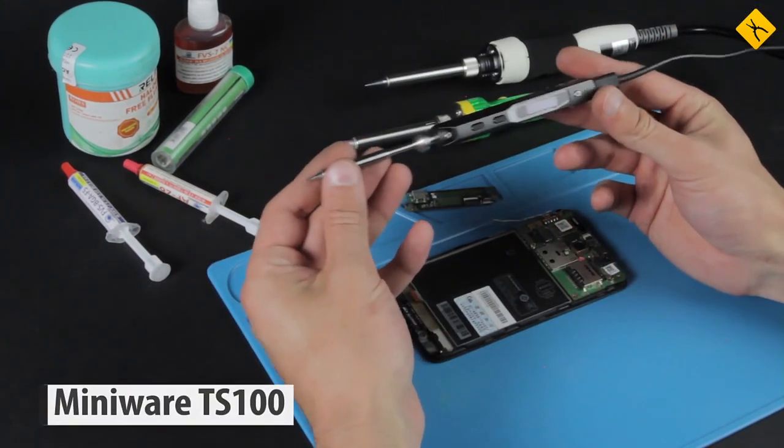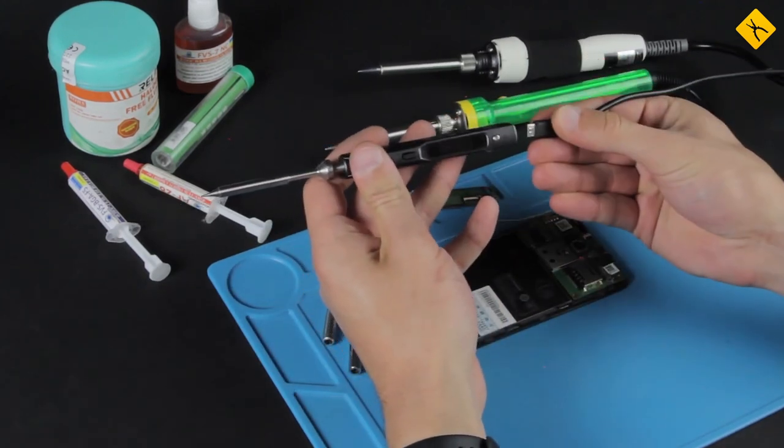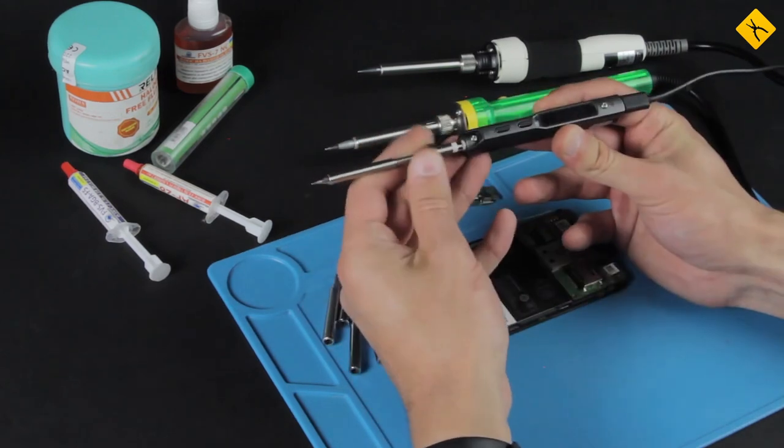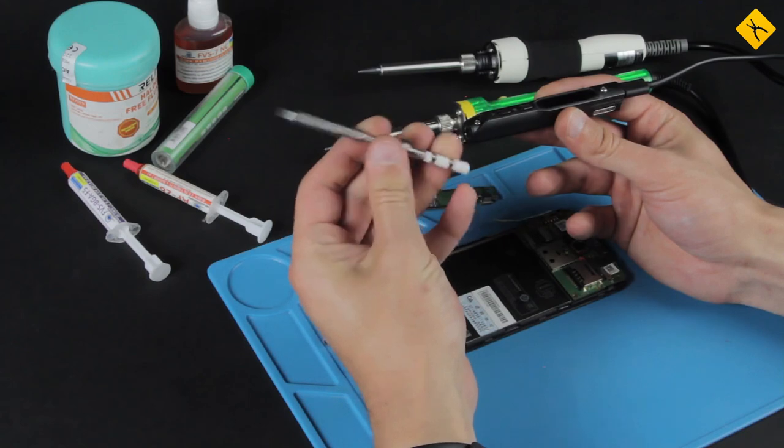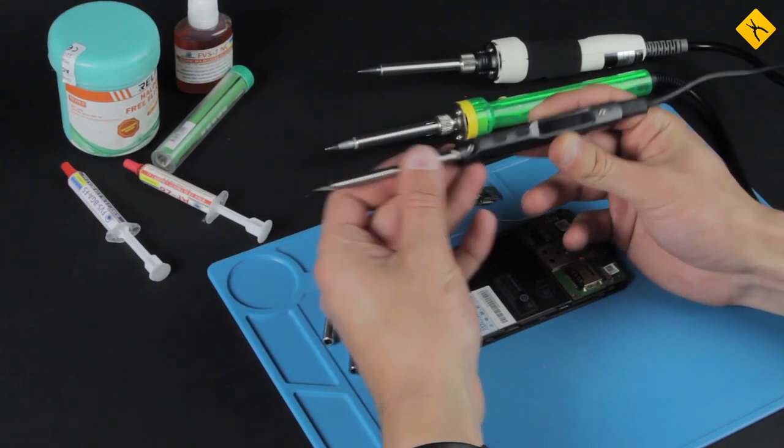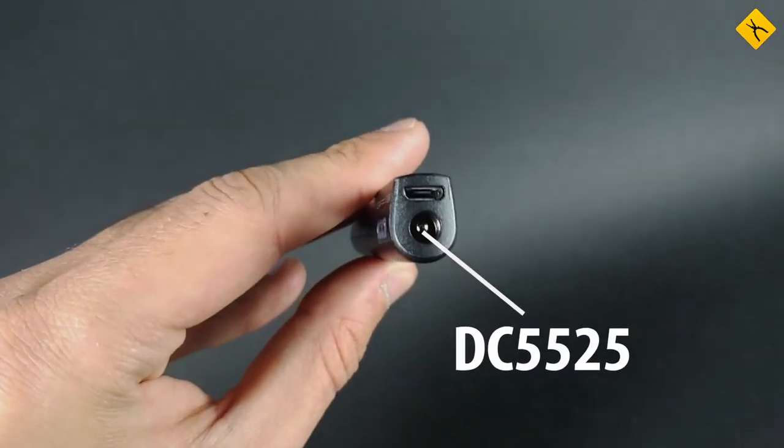Another great choice is the cutting edge MiniWare TS-100. Using a USB port for firmware updates and customizing settings from a PC is a special perk of this model. It's powered by 12 to 24 volt input supplied by the DC 5525 connector.